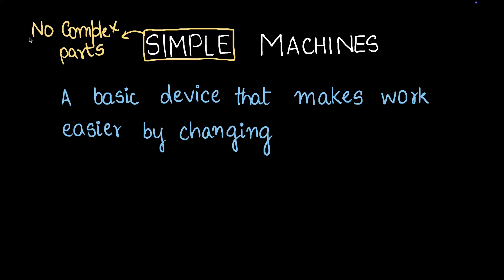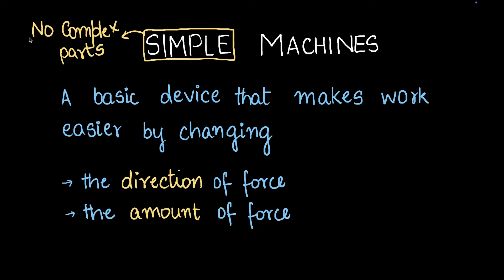Simple machines are very basic devices. They help us work by changing one of these two things, or maybe both of these things. They can either change the direction of force, or they can change the amount of force which is being applied. So either the direction of force is changed by this machine, or the amount of force is changed by the machine, and that really helps in achieving our task. We'll go through examples of all of this. This may seem vague right now, but don't worry, it's really simple.